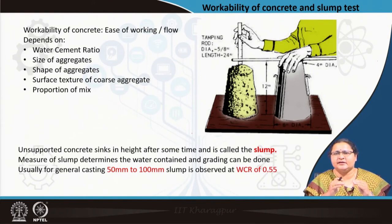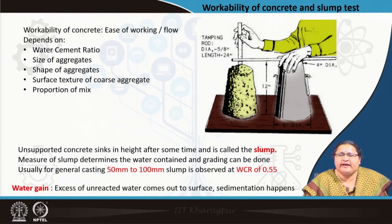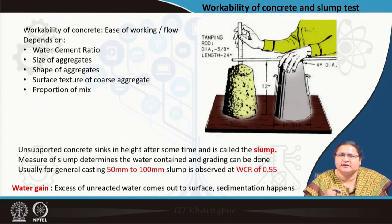The slump of unsupported concrete is a measure of the water cement ratio. This is a site check to assess the quality of concrete going into construction. If there is more water than needed, whatever the quality of other ingredients, strength gain will not happen and there is a risk of segregation. Excess unreacted water sometimes comes out — this sedimentation is called water gain or bleeding of concrete.